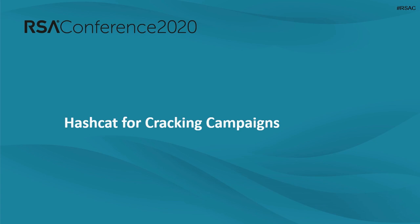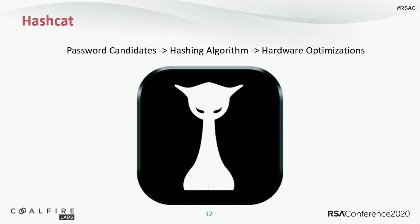Let's talk about the tools currently used for hash cracking campaigns. Hashcat is the de facto standard. It includes the three major components: the ability to generate a mass quantity of password candidates, support for hundreds of hashing algorithms including unusual permutations seen in open source and commercial projects, and support for hardware optimizations. If you have NVIDIA GPUs with CUDA, Hashcat can use the mathematical cores on GPUs to generate hashes — making it massively more powerful than running on a CPU.